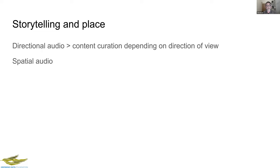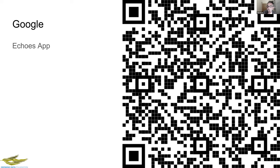Upcoming as well is directional audio, which is a really interesting thing. With new advanced headphones from Apple and now Google as well, you can actually have directional audio — you can imagine yourself outside looking towards a particular object and hearing a story about it, then simply turning your head and hearing another story, or the same story from a different point of view. So that's an upcoming feature. The application already has spatial audio as well. You can just download the Echoes app and go for a walk down North Terrace.